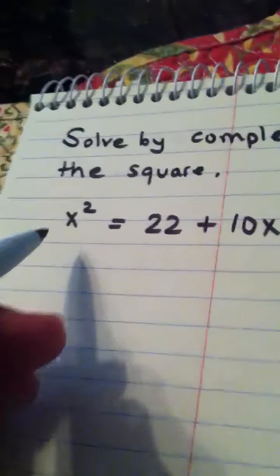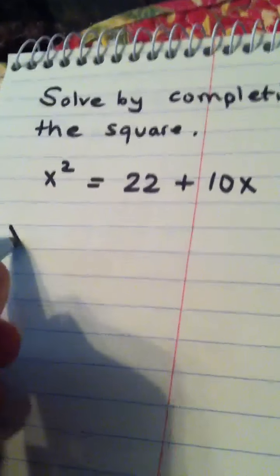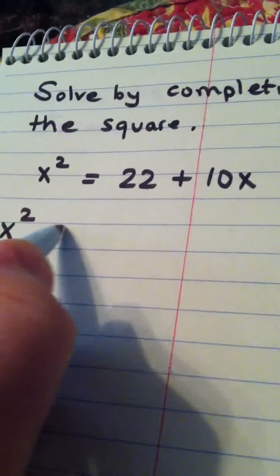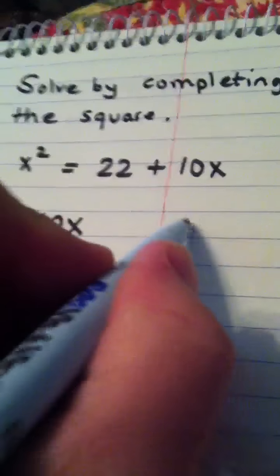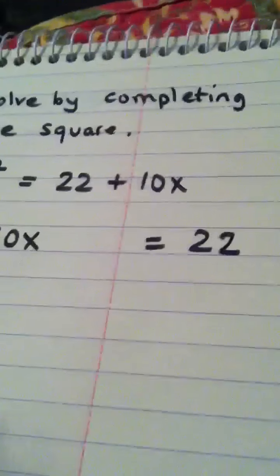So my first readjustment here is going to be to write this as x squared minus 10x is equal to 22. Okay.